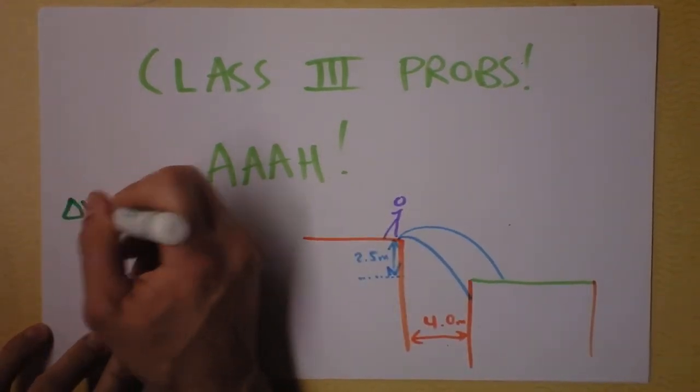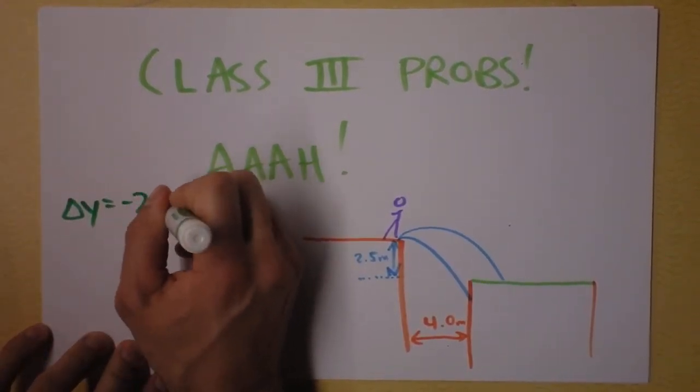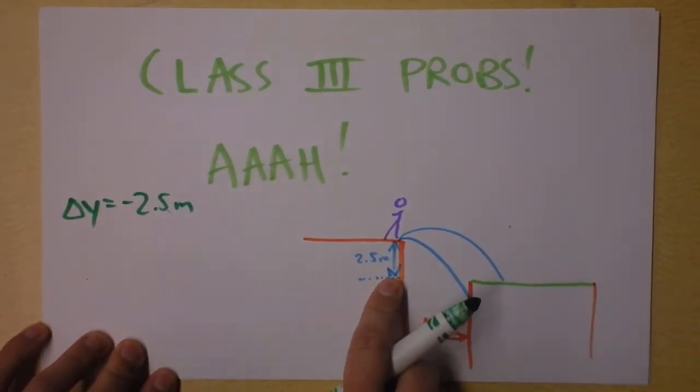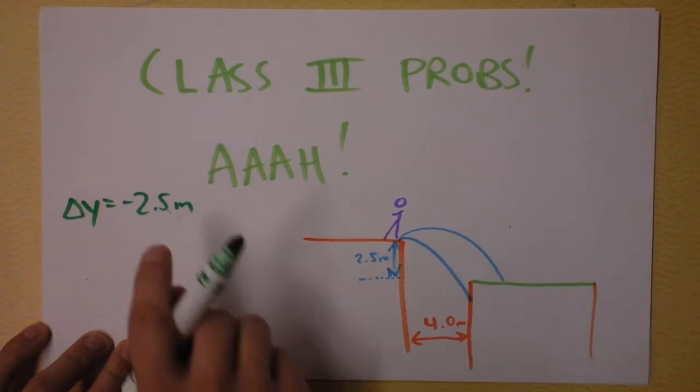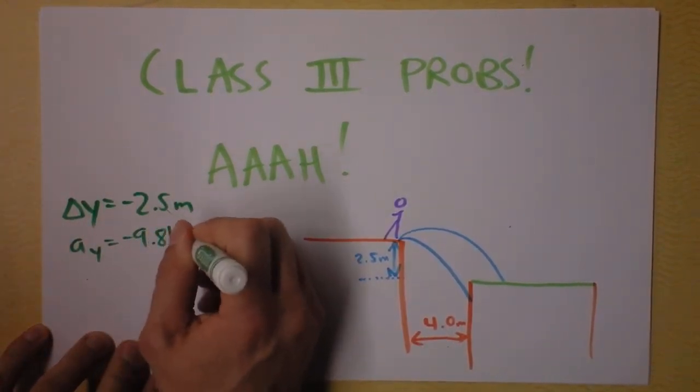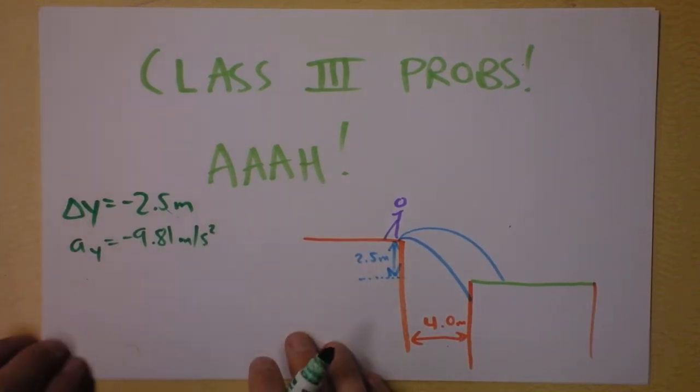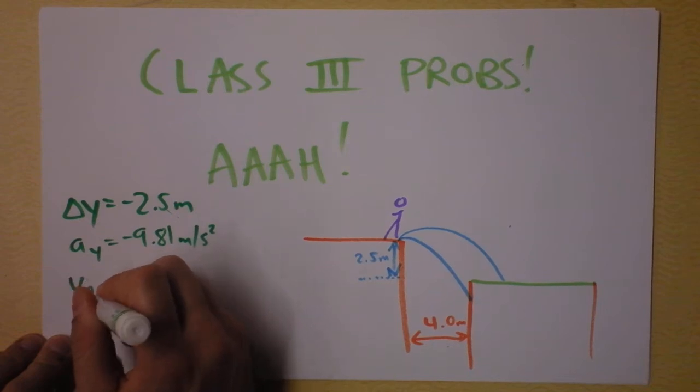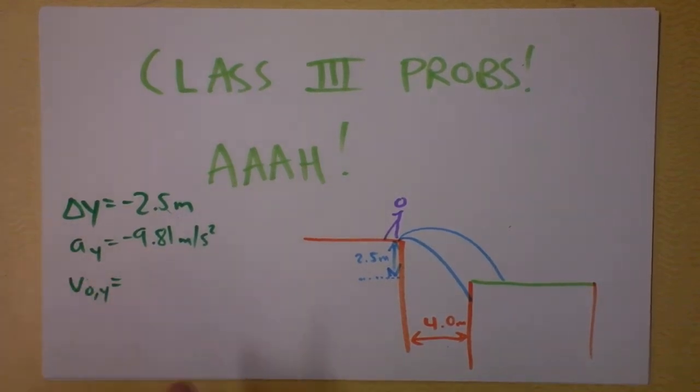You could say delta y equals negative 2.5 meters. Now, you need to figure out why I said it was negative, because I'm not going to waste my time talking about that. Be very careful. And you could say that the acceleration in the y direction is negative 9.81 meters per second squared. And you could say that the initial velocity in the y direction, oh, could you? What is the initial velocity in the y direction? Before we even begin this problem,